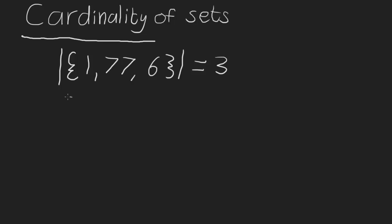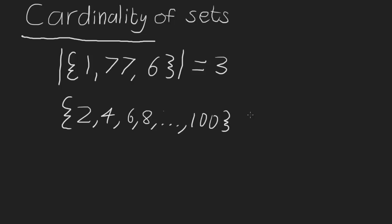Let's look at another example. Say we have the set {2, 4, 6, 8, ...} up to 100. What's the cardinality of this set? Well, there are 100 numbers from 1 to 100, and this set contains only the even ones, so it's half of them. Half of 100 is 50, so the cardinality of this set is 50.